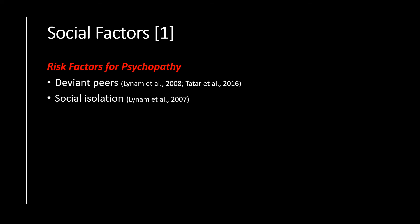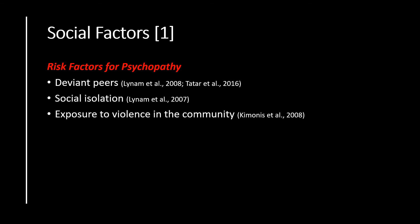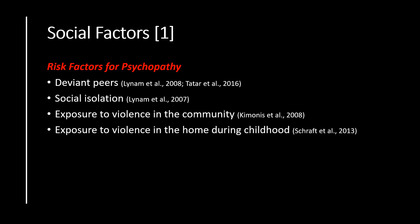Finally, we explore some of the social factors pertinent to the potential underpinning of psychopathy. Risk factors include having deviant peers and involvement in gangs and antisocial behaviour, social isolation and neglect from parents or loved ones, exposure to violence in the community and exposure to violence in the home during early childhood. There is also physical traumatisation such as blunt force trauma and broken bones, which might interact with the biological factors and predictive mechanisms for psychopathy discussed earlier.